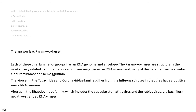The answer is E. Paramyxoviruses. Each of these viral families or groups has an RNA genome and envelope. The paramyxoviruses are structurally the most closely related to influenza, since both are negative-sense RNA viruses and many of the paramyxoviruses contain neuraminidase and hemagglutinin. The viruses in the Togaviridae and Coronaviridae families differ from the influenza viruses in that they have a positive-sense RNA genome. Viruses in the Rhabdoviridae family, which includes the vesicular stomatitis virus and the rabies virus, are bacilliform negative-stranded RNA viruses.